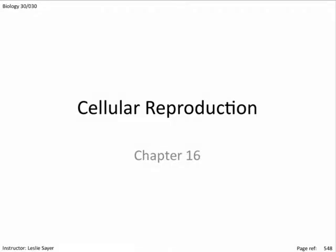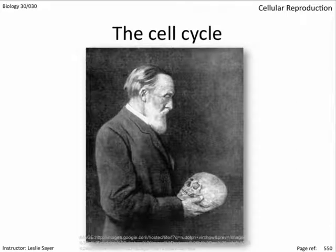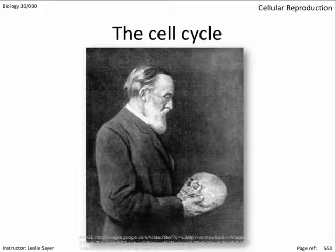This is Chapter Sixteen: Cellular Reproduction. This is Rudolf Virchow. In the mid-nineteenth century, his microscope observations of cells dividing led him to propose a radical new theory.